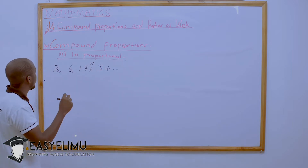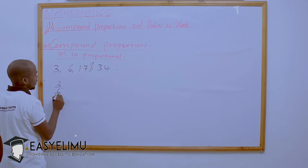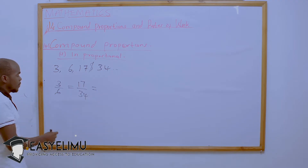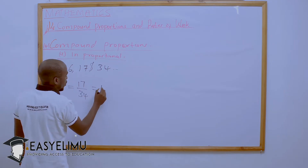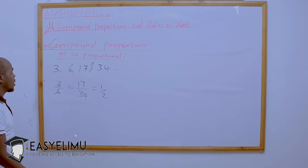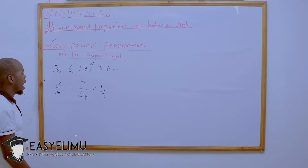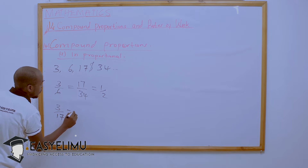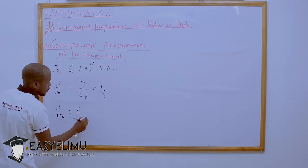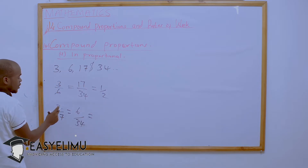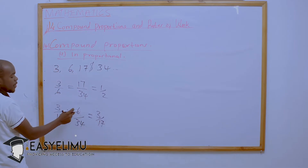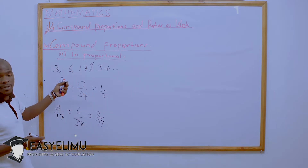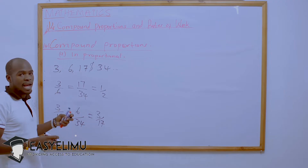These numbers may be in proportion if and only if, when you take 3 divided by 6, you get 17 over 34. This gives you 1 over 2 in both cases, confirming they are in proportion. The same should apply: if you take 3 over 17, it should give you 6 over 34, which also gives 3 over 17. When numbers behave in such a manner, we say those numbers are in proportion.